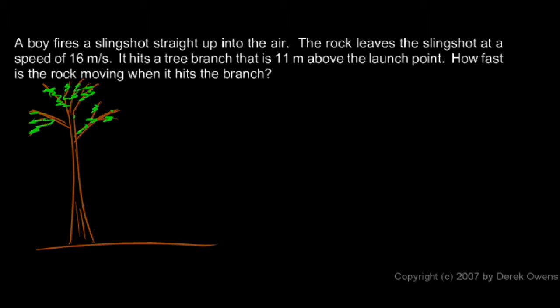And we're told a little bit of given information here. The rock leaves the slingshot moving at 16 meters per second, and it hits a branch that's 11 meters above the ground, or above the launch point.